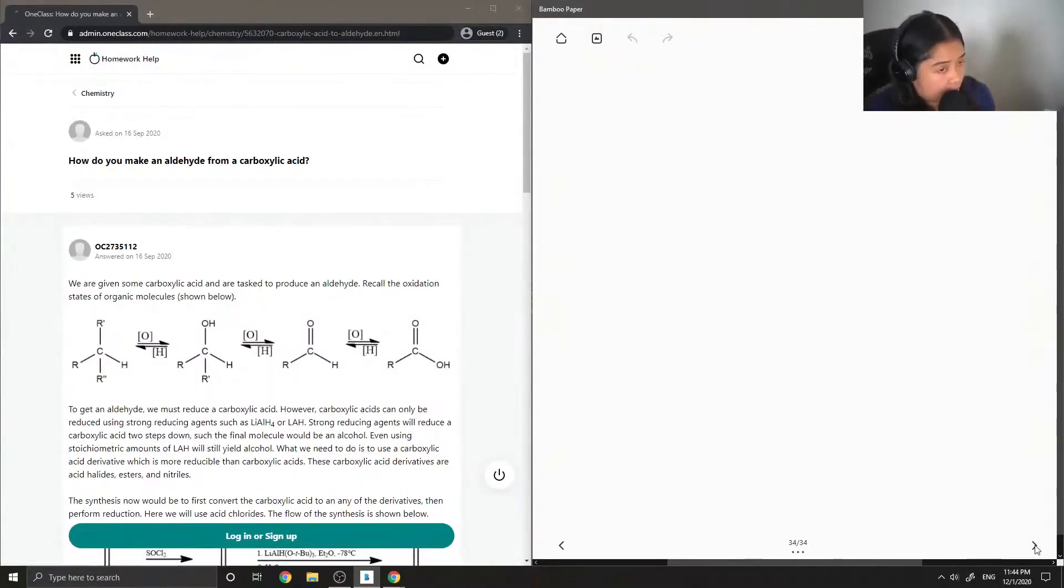Okay, so moving on to question 8. How do you make an aldehyde from a carboxylic acid? Unfortunately, making an aldehyde from a carboxylic acid doesn't just use one reagent.